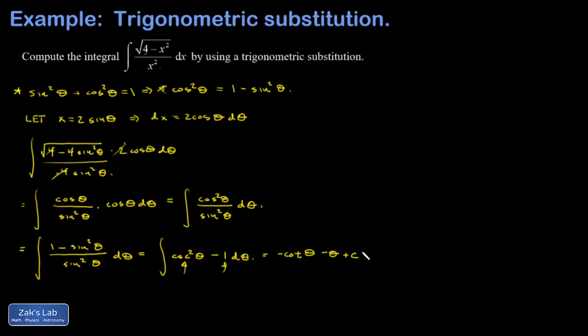Now the problem isn't done because we have to go back in terms of x, which is the integral that we were given. And to get this done, we have to sub out for theta in terms of x. So if I go back to my original substitution, I had x equals 2 sine theta. Divide that by 2 and invert the sine function. And theta is the angle whose sine is x over 2.